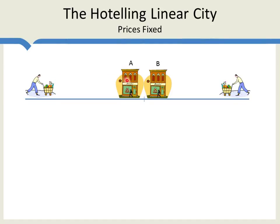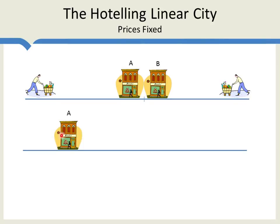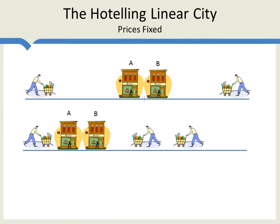In this case, A will get half of the market — everybody to the left of firm A will shop at A — and B will get half of the market. The easiest way to show that this is the equilibrium is to show that any other possibility cannot be in equilibrium. For example, suppose firm A were to locate off-center. By locating next to firm A, firm B can grab more than 50% of the market. Firm A will get everyone to the left, which is a small portion, and firm B will get everyone to the right — more than a majority of the market.